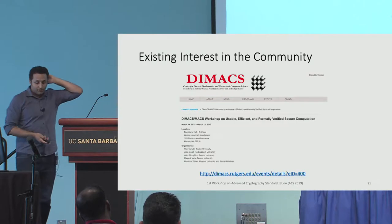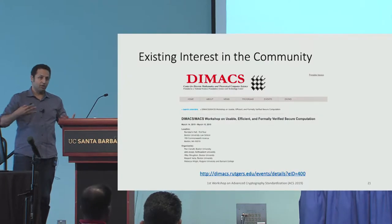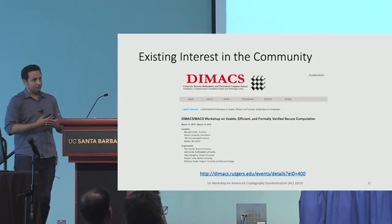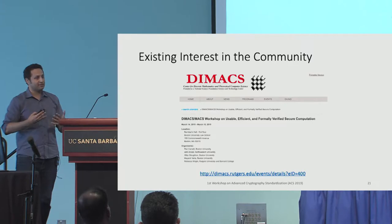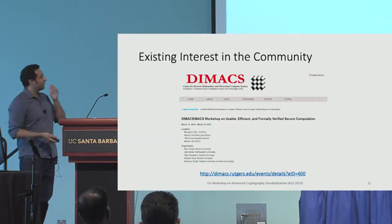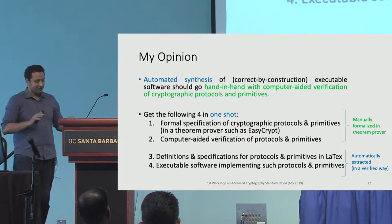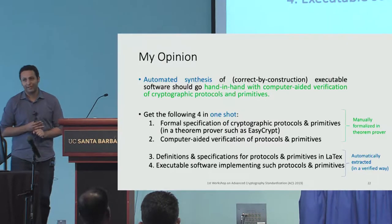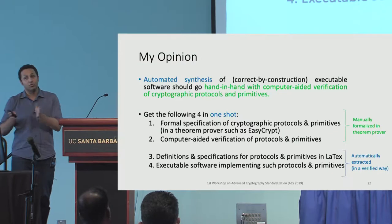There are already workshops and funding programs about merging cryptography and the PL community for formal verification. The communities talk — I've been to that workshop, it was very useful — but they speak different languages and it's unclear how soon they can merge. Hopefully this work provides evidence that it's going to happen soon. My opinion — and this is the end of the fluffy stuff, it's all technical from here — is that when you talk about formal verification, don't only talk about specification: you might as well get executable software that is correctly constructed.